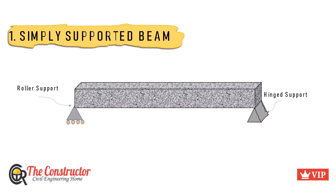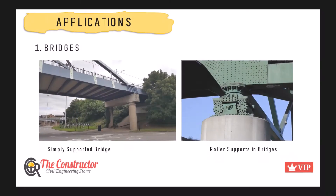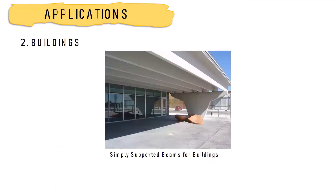A roller support does not allow movement in the vertical direction, and a hinge support does not allow movement in both horizontal and vertical directions. As a result, reactions are originated at these supports, and both supports provide the beam the ability to rotate freely. This quality is used for the construction of simply supported bridges as well as for buildings, especially earthquake resistant buildings.